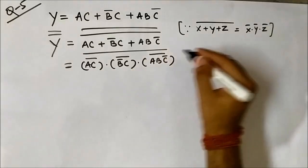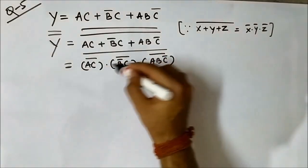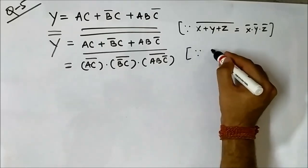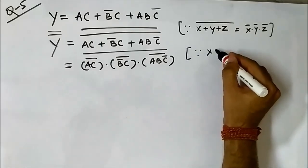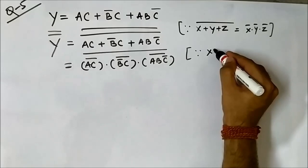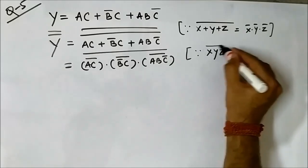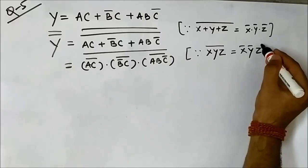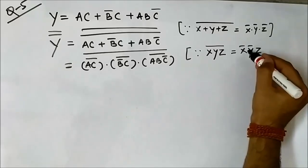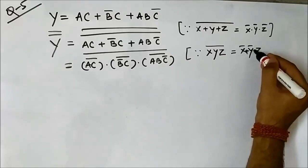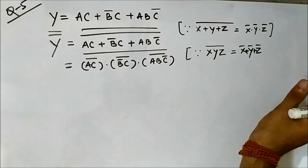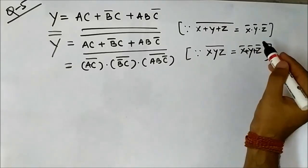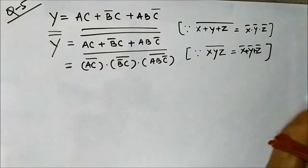Then in each of these individual terms we apply the second De Morgan's theorem: (xyz)' = x' + y' + z'. So (xyz)' gives us x complement or y complement or z complement.